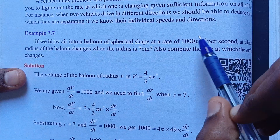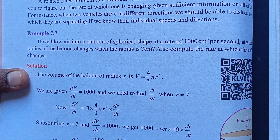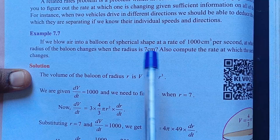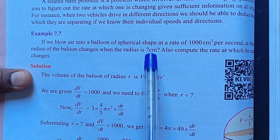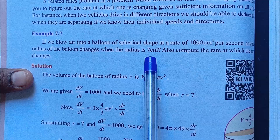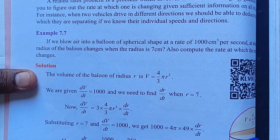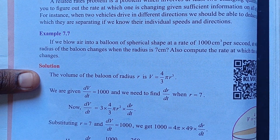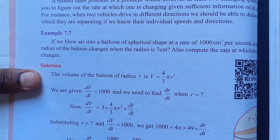So what do we have? The volume change per second is 1000 centimeter cube per second. The radius is 7 centimeter. We have a sphere shape.